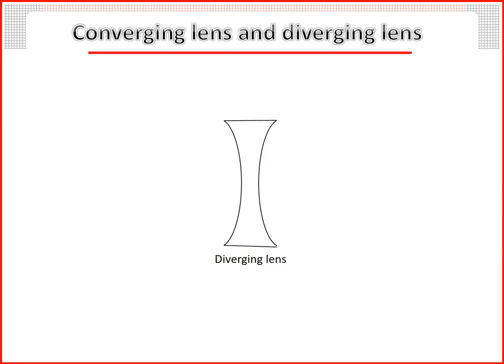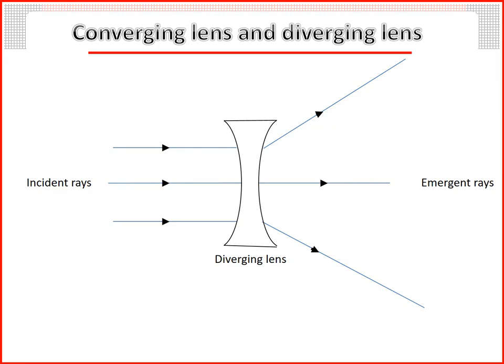Diverging lens: when a beam of light is directed on a diverging lens, the emergent rays diverge.